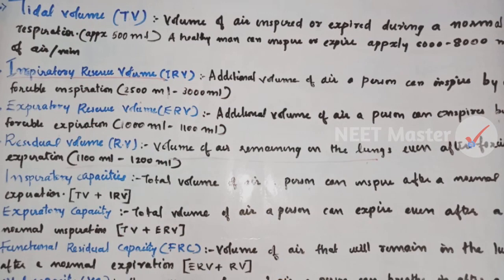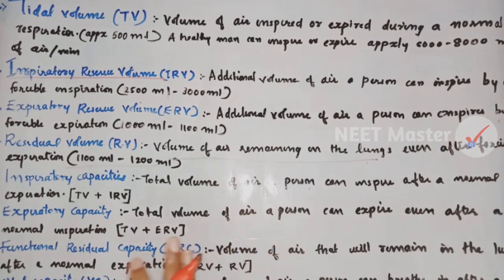The respiratory volumes are: tidal volume, inspiratory reserve volume, expiratory reserve volume, and residual volume.